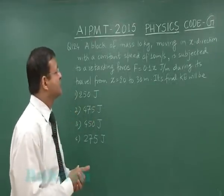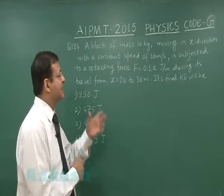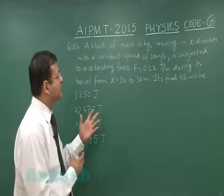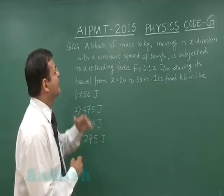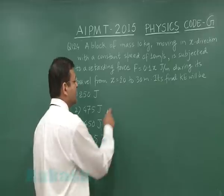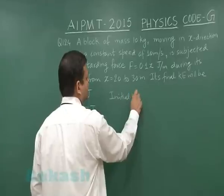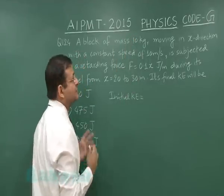Now this question 124, you see this is a simple application of integration in the work energy power chapter. Here they are saying that a block of mass 10 kg is moving in x direction with a constant speed of 10 meters per second, so it has some initial kinetic energy. The initial kinetic energy will be half mv squared, so half into m that is 10, that is 5 into v squared 100, so that makes it 500 joules.